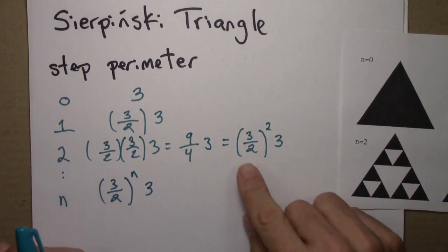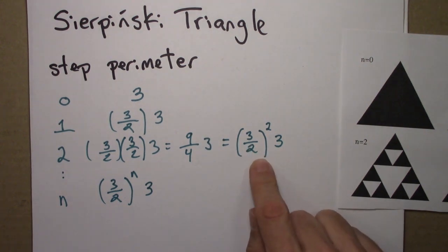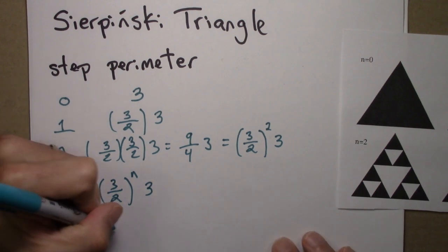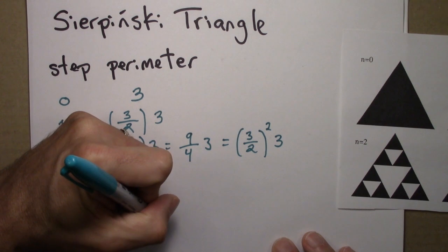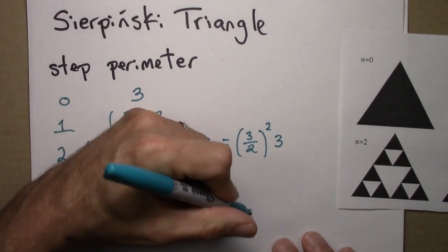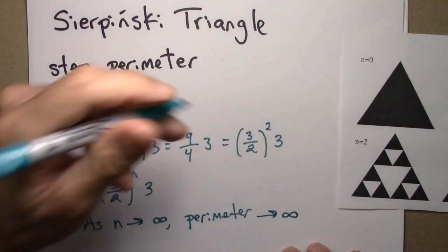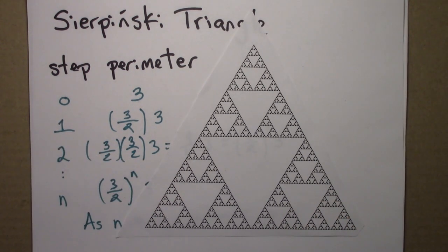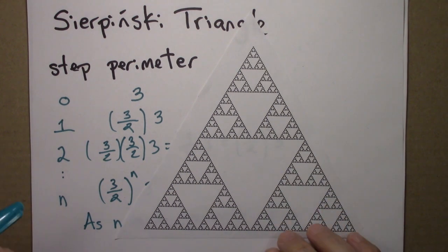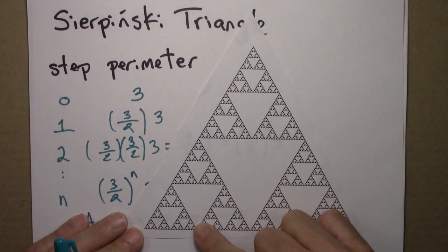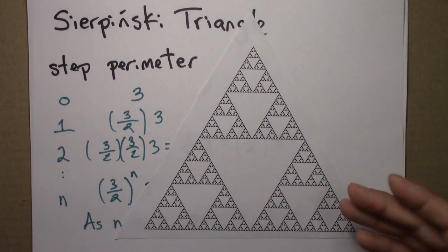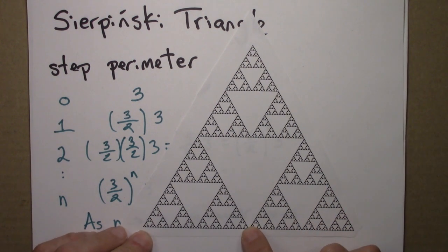The thing to note is that these numbers are getting larger. 3/2 is 1.5, so you multiply 3 by 1.5 by 1.5 by 1.5 — those numbers get larger and larger. As n goes to infinity, as we do this more and more, the perimeter is also going to go to infinity. So the Sierpinski Triangle, after carrying out this process many times, has area approaching 0, but perimeter growing larger and larger — in the mathematical limit, 0 area but infinite perimeter.